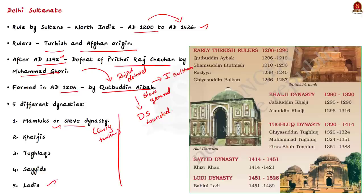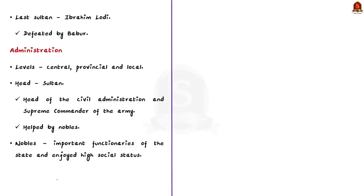The Lothi dynasty was the last in the Delhi Sultanate. The ruler at that time was Ibrahim Lothi. He was defeated by the Mughals under the leadership of Babur in AD 1526, after which Babur established the Mughal Empire in India. So this was the brief history about the Delhi Sultanate.